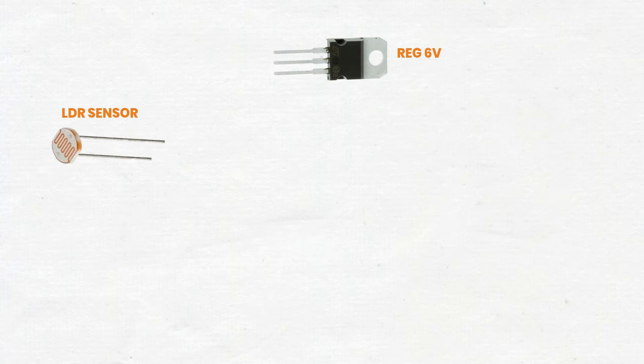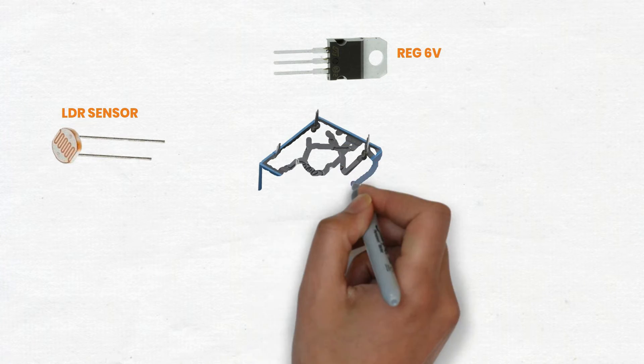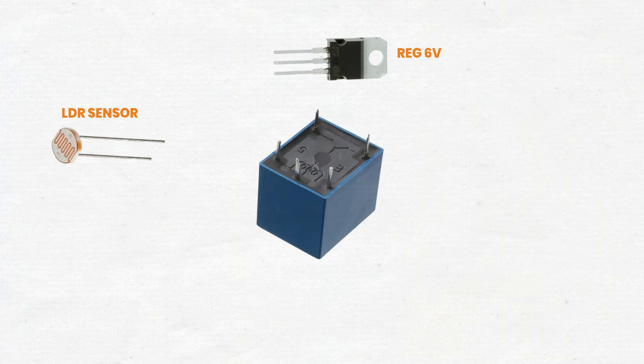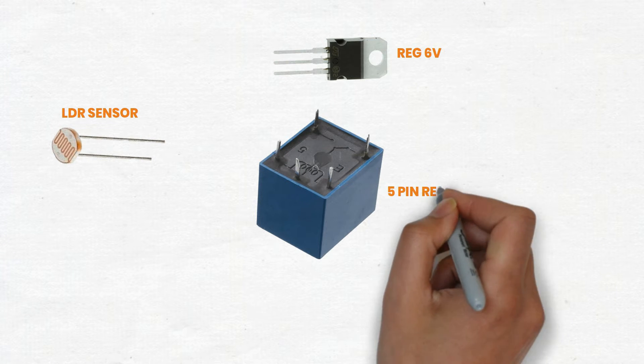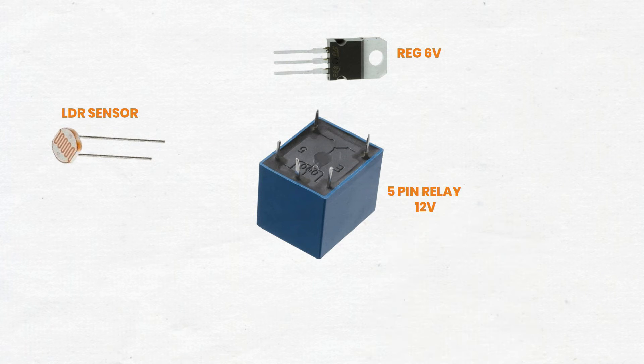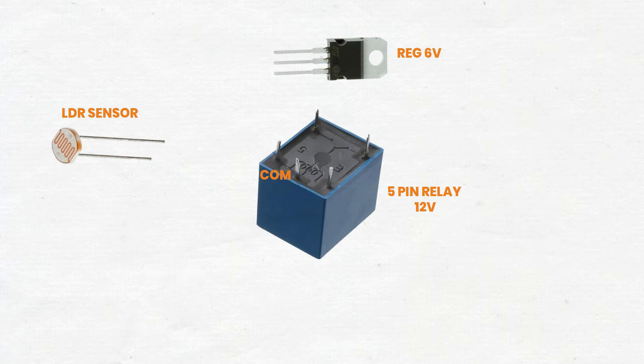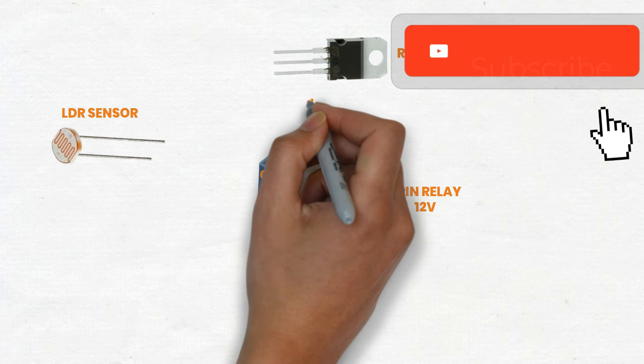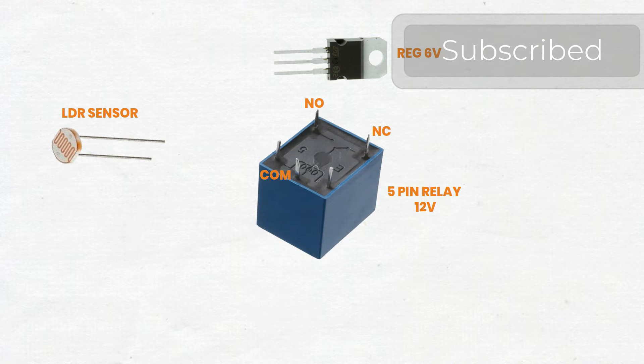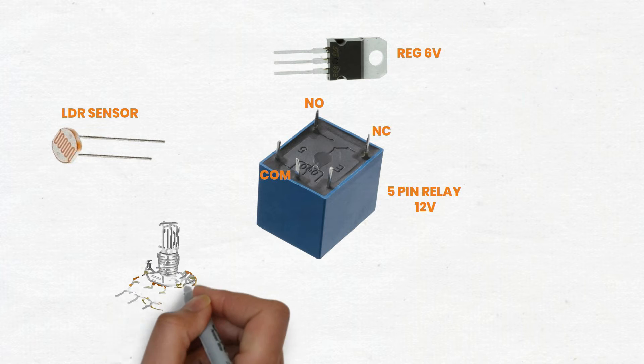This project is ideal for beginners interested in learning how to control higher voltage or current loads, such as lamps or motors, based on the light intensity detected by an LDR. In this tutorial, we will guide you through the entire process, from assembling the voltage regulator to connecting the LDR and potentiometer, and finally integrating the relay and transistor to control your load.